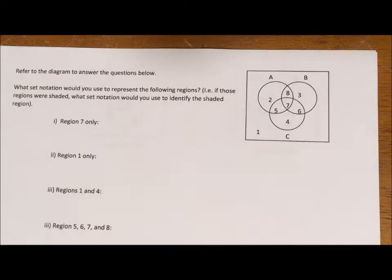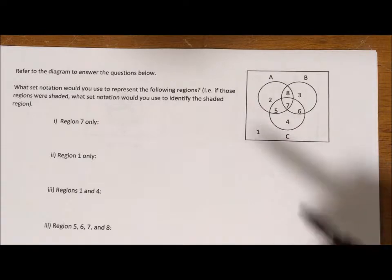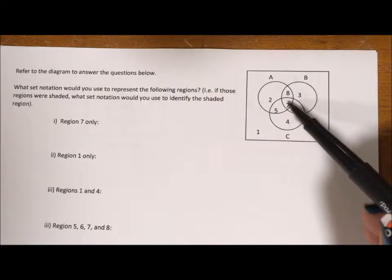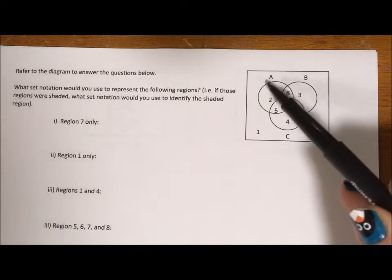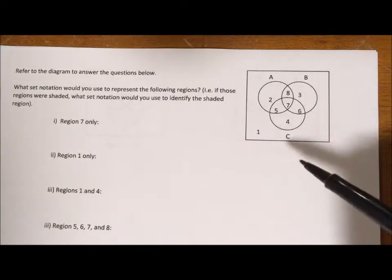So let's start with number 7. Seven is smack dab in the middle and what it has in common is it's part of A, B, and C. Now I don't want all of A, all of B, all of C. That would be union.